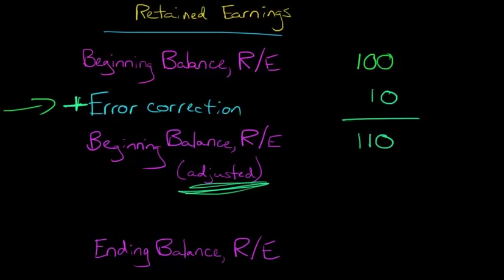So obviously this isn't the Ending Balance, we haven't factored in Net Income or anything like that yet. We're just saying that we've done our homework, and we said we should really be adjusting that balance. It should be at $110.